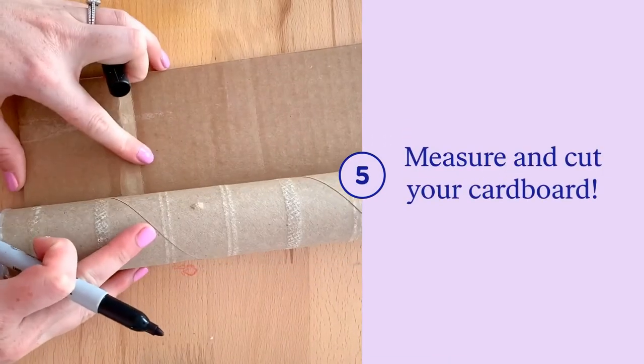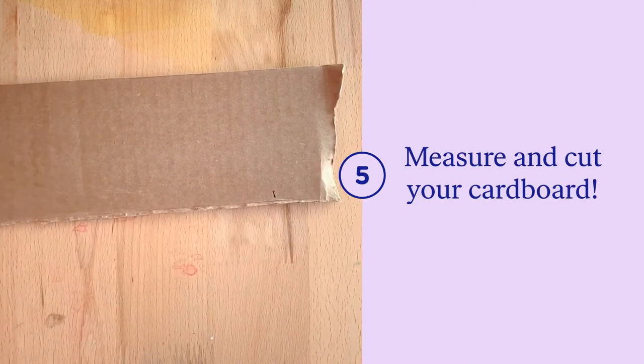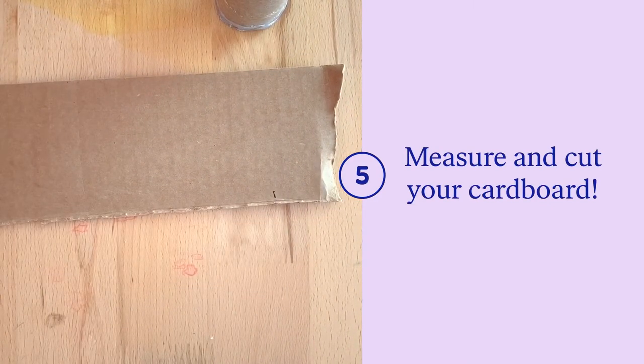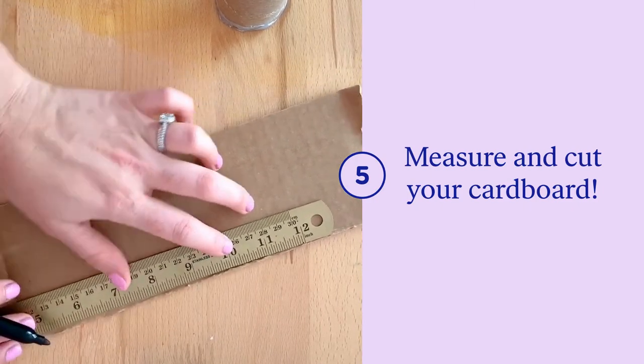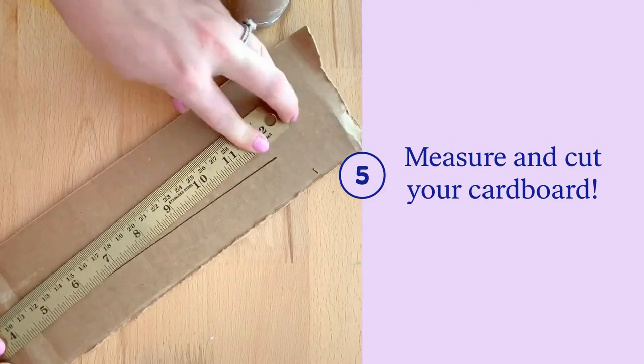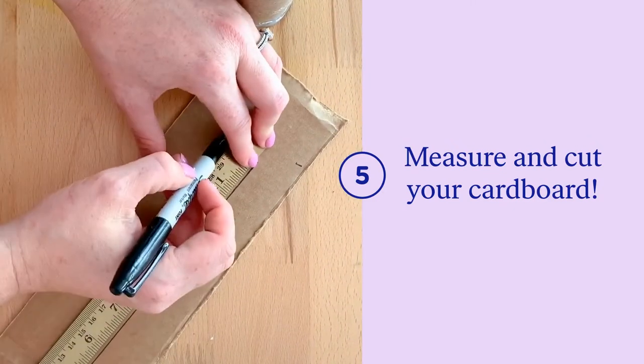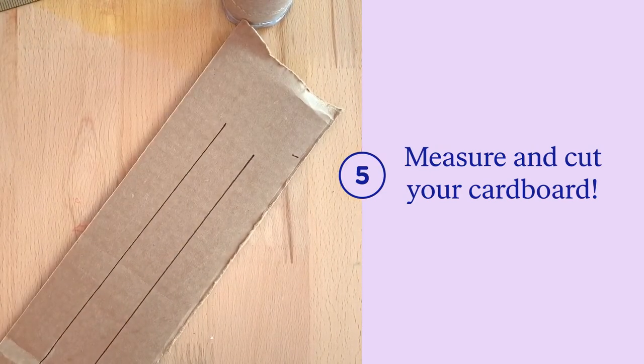Now that you have your circles cut out, put those aside so that we can create the mirrored portion of our craft. Lay out your piece of cardboard and measure it against your cardboard tube. You're going to want this to be about an inch shorter than the actual tube. Now create three strips of cardboard. I used a ruler to create mine approximately one inch wide apart. Once you've measured this, you can start to cut them.